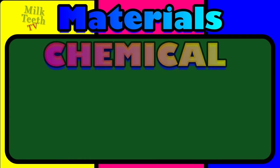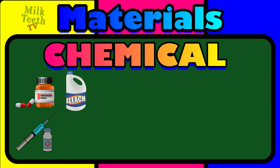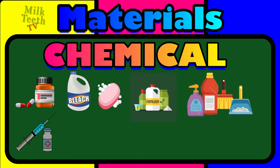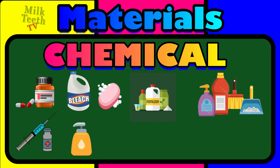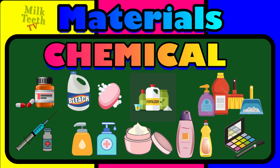Now can you think of a few things made up of chemicals that you use in your day-to-day life? Medicines, injections, bleach, soap, fertilizers for plants and trees, floor and bathroom cleaners, hand wash, sanitizers, creams and lotions, shampoos, dish wash soap, and even makeup — all are things that are made from chemicals.